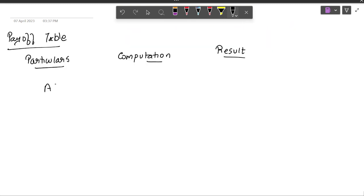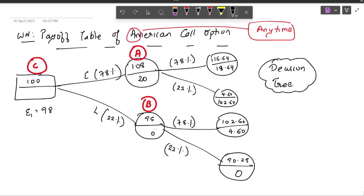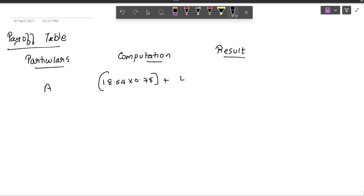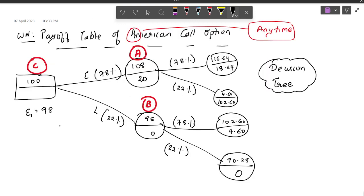The formula for A would be 18.64 into 0.78 plus, plus what? 4.6 into 22 percentage. What is the expected profit you get over there? Divided by 1.05127, the present value. 14.79. Alright, once you get 14.79 as the answer for the first one.